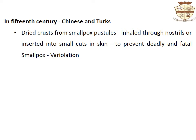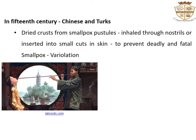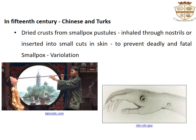The first recorded attempts to induce immunity deliberately were performed by the Chinese and Turks in the 15th century. The dried crust from smallpox pustules were either inhaled through the nostrils or inserted into cuts in the skin, a technique known as variolation, performed to prevent the deadly smallpox.